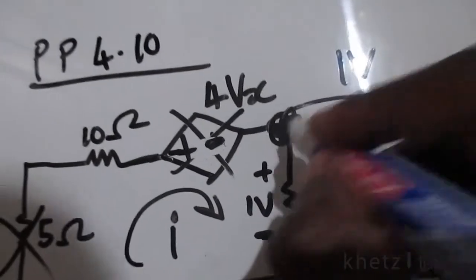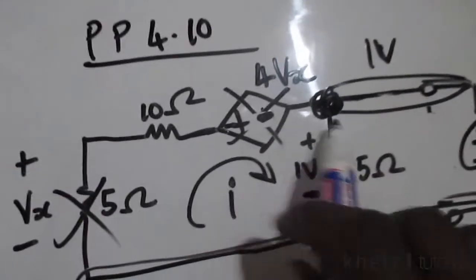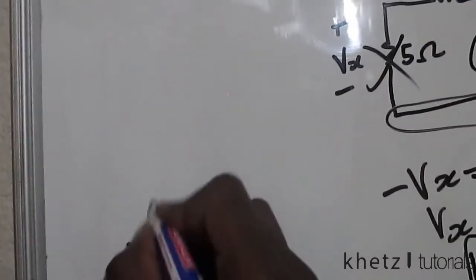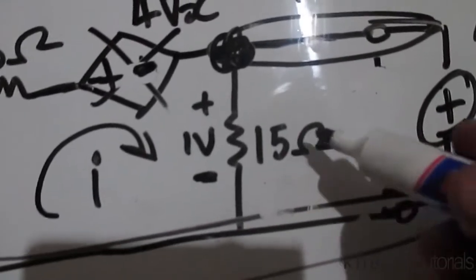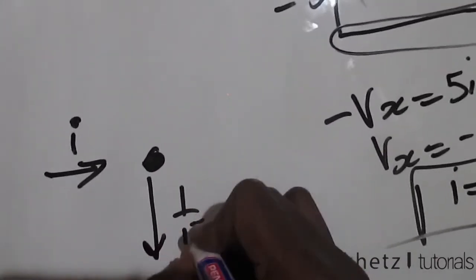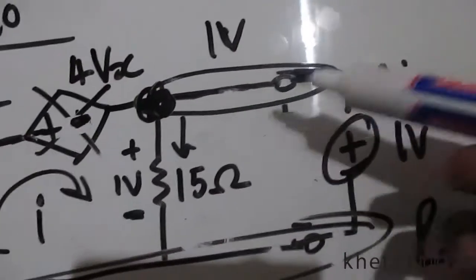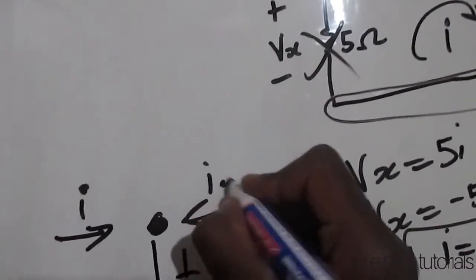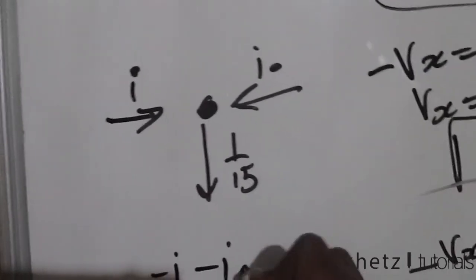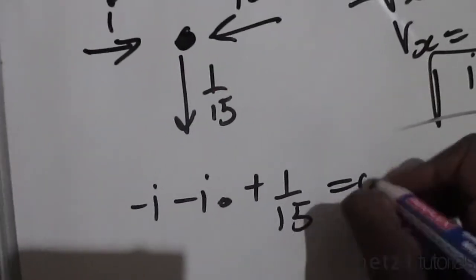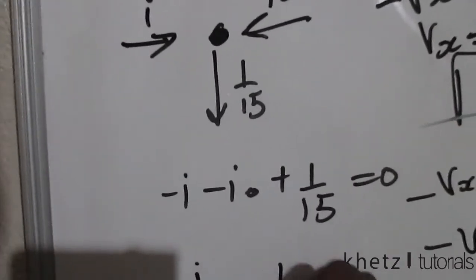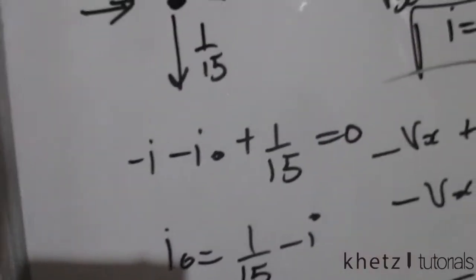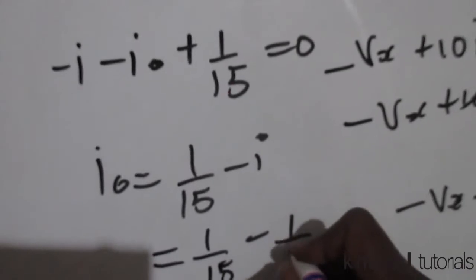At this top node, summing the currents: we have i coming in. The current going down through the 15-ohm resistor is 1/15 (since 1 volt is across it), and io is coming into the node. So: negative io plus 1/15 equals 0, meaning io equals 1/15 minus i. With i equal to 1/5, we get io equals 1/15 minus 1/5.